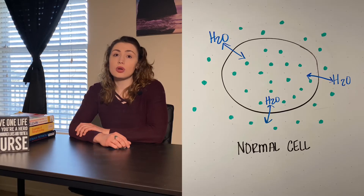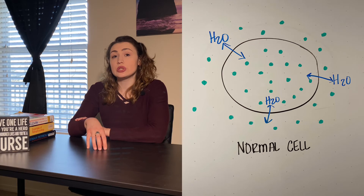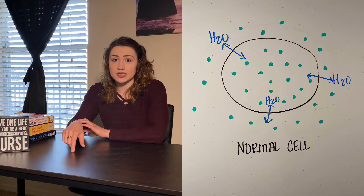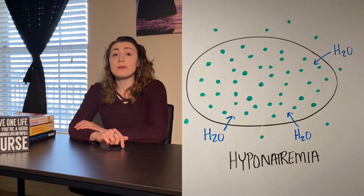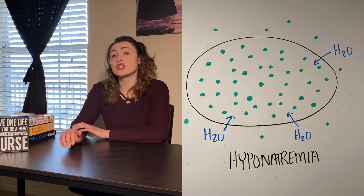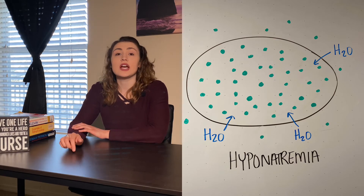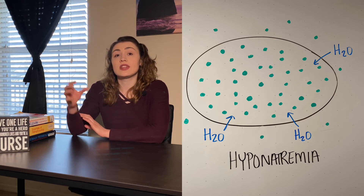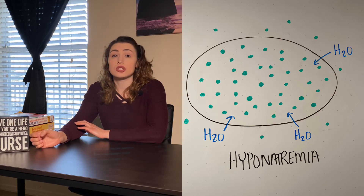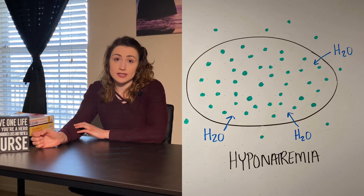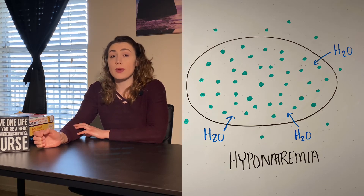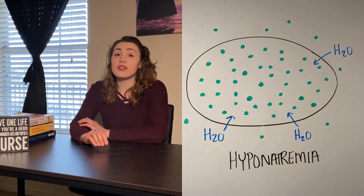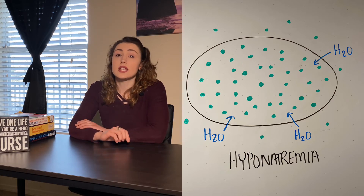Hyponatremia causes swelling of cells — remember that where salt goes, water follows. In a normal cell, water flows into and out of the cell in equal amounts. But in hyponatremia, there is not enough sodium in the extracellular space, so there is nothing keeping water there. Water will flow by osmosis into the cell, causing the cell to swell.